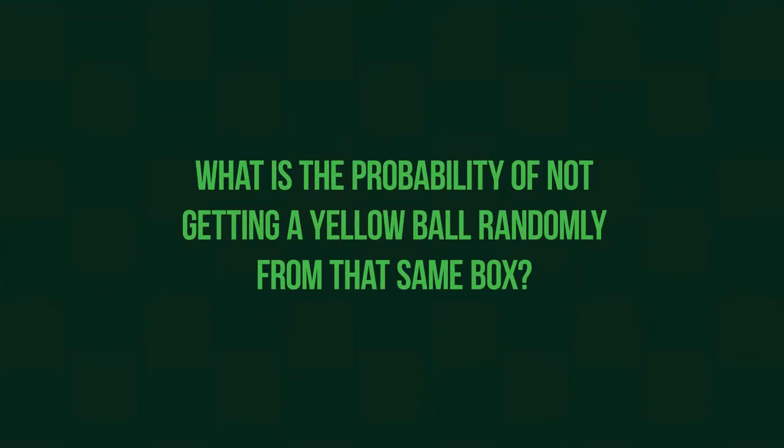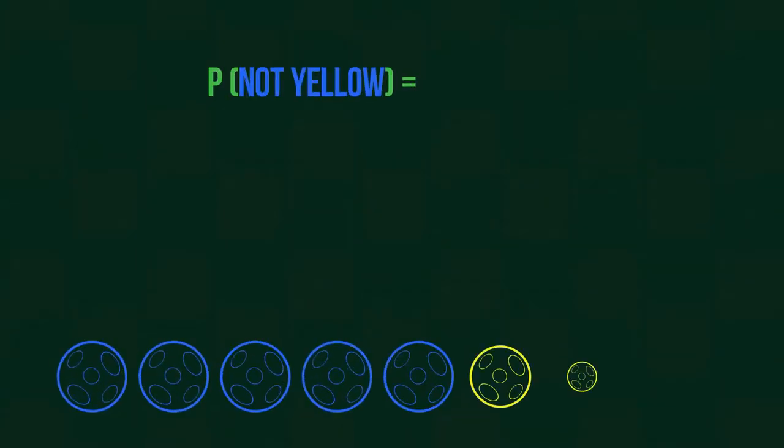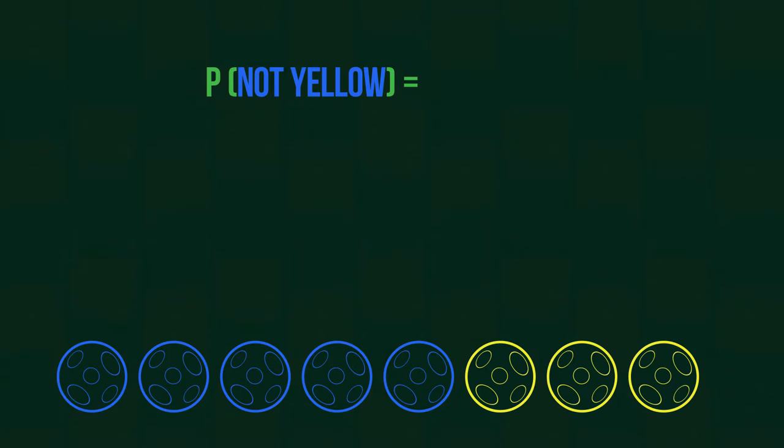Let's see our next example. What's the probability of not getting a yellow ball randomly from that same box? Well, we can calculate it in the same way we did in the previous task. There are 5 balls that are not yellow, so this probability is 5 eighths, but we can think of another way too.